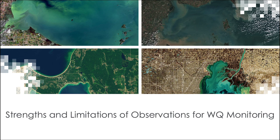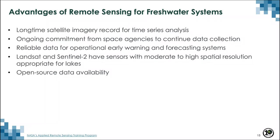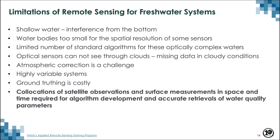Let's look at strengths and limitations of observations for water quality monitoring. Advantages of remote sensing for freshwater systems include: satellites have long-term imagery available — Landsat since 1972, MODIS since 1999, then VIIRS, Sentinel-2 and Sentinel-3 OLCI — with an ongoing commitment from space agencies to continue data collection. Remote sensing provides reliable data for operational early warning and forecasting systems. Landsat and Sentinel-2 have sensors with moderate to high spatial resolution appropriate for lakes, and all these data are open source.